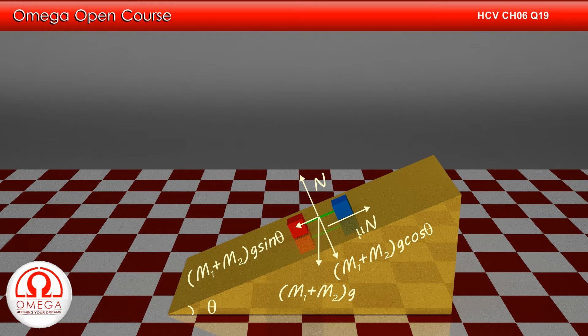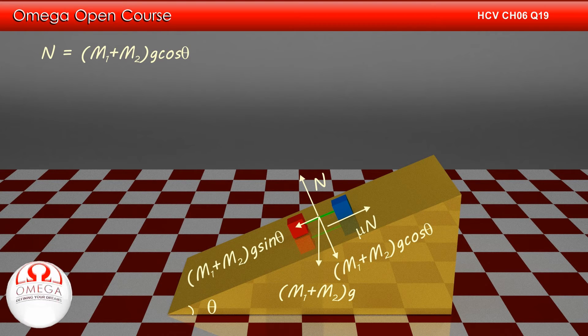The block is moving down with acceleration a. Balancing the forces perpendicular to the incline, we get N equals (M1+M2)g cos theta.